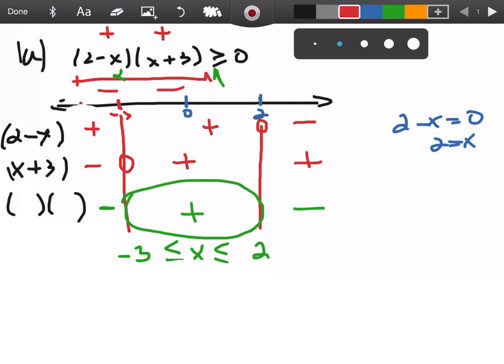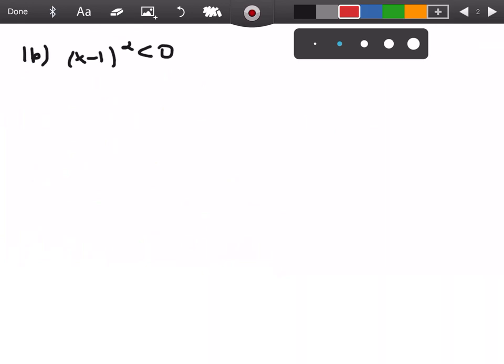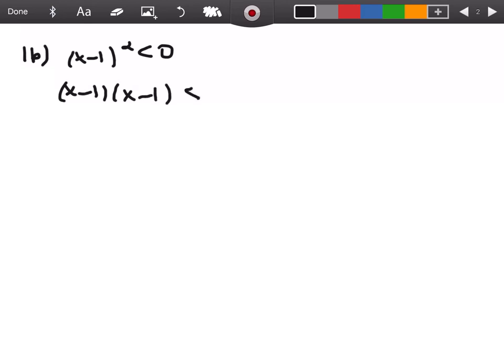So that's one problem. I'll do another one in the same video, the second one. This one's a little bit trickier because they haven't fully factored it. But what you want to do is just go ahead and write it out: (x-1)² really means (x-1)(x-1) < 0. Now you've got your two factors.